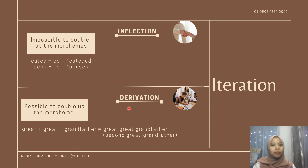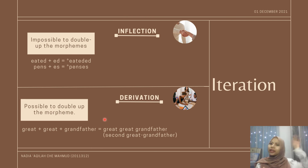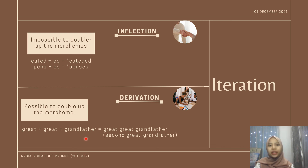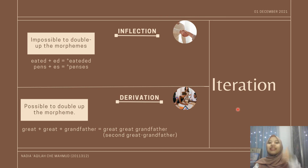Unlike inflection, it is possible to repeat or double up the derivational morpheme. For example, if we want to mention an ancestor who is way higher than our great-grandfather in the family tree, we can double up the word 'great,' making it 'great-great-grandfather,' which means the second great-grandfather. This is grammatically correct.